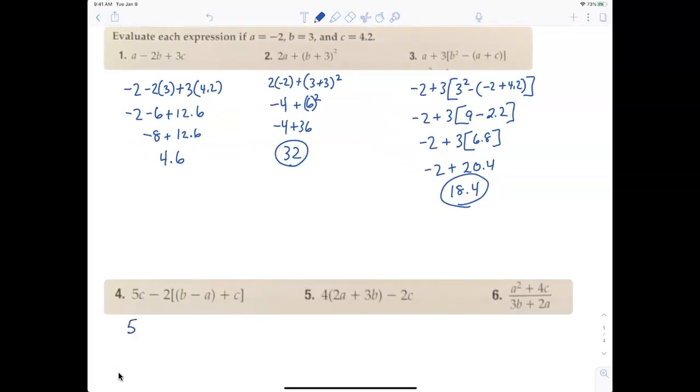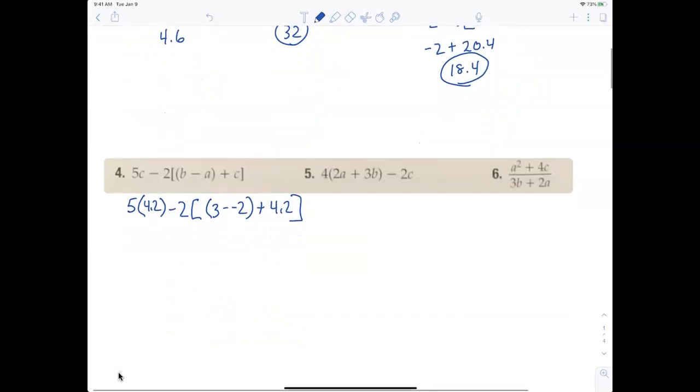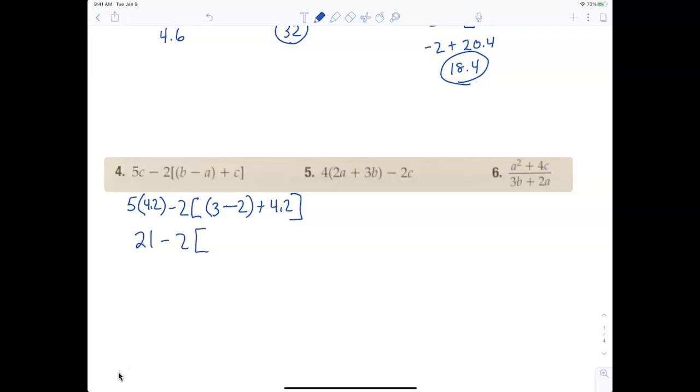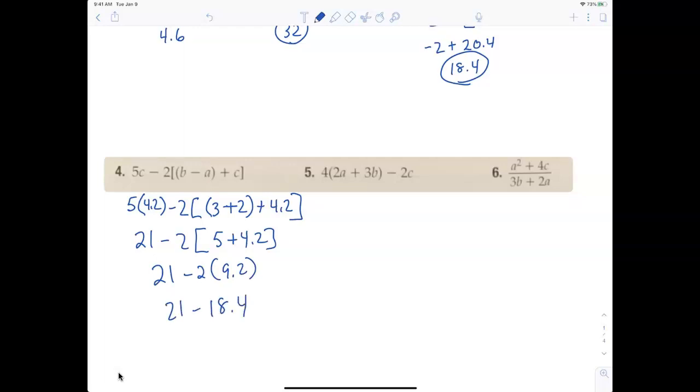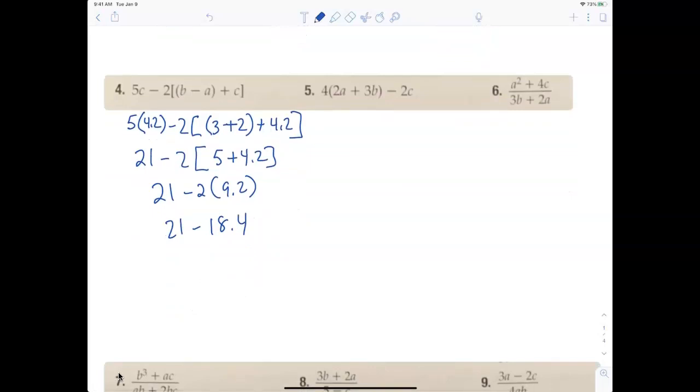Number 4: 5 times 4.2 minus 2 bracket 3 minus negative 2 plus 4.2. So now we have 5 times 4.2, that's 21, minus 2 times, now this is where I'm trying to trick you, 5 plus 4.2. 21 minus 2 times 9.2, 21 minus 18.4. 21 minus 18 is 3, 3 minus 0.4 is 2.6.